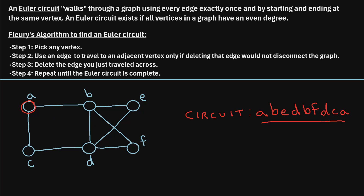Let's just take a look: we go A, B, E, D, B, F, D, C, and A. We can see that when we follow that path, we used every edge in the graph exactly once, and we started at A and ended at A. So that's just a way to verify that we did indeed find an Euler circuit in this graph.